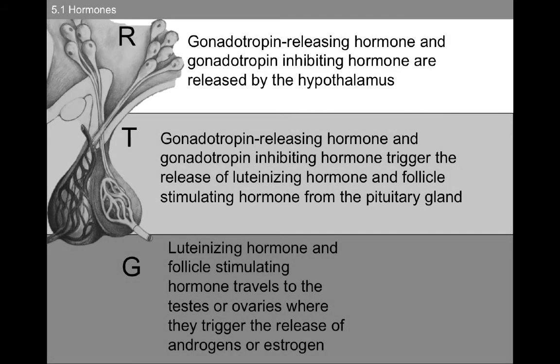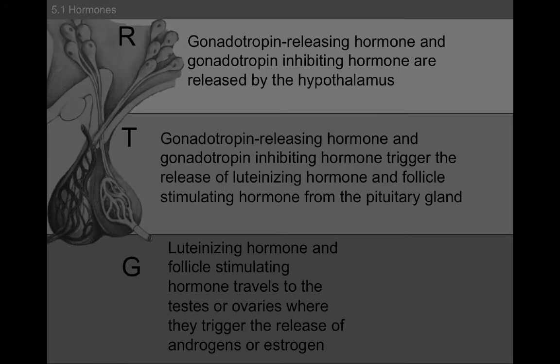Gonadotropin-releasing hormone and gonadotropin-inhibiting hormone are released by the hypothalamus. They trigger the release of luteinizing hormone and follicle-stimulating hormone from the pituitary gland. Luteinizing hormone and follicle-stimulating hormone then travel to the testes or ovaries, where they trigger the release of androgens or estrogen.